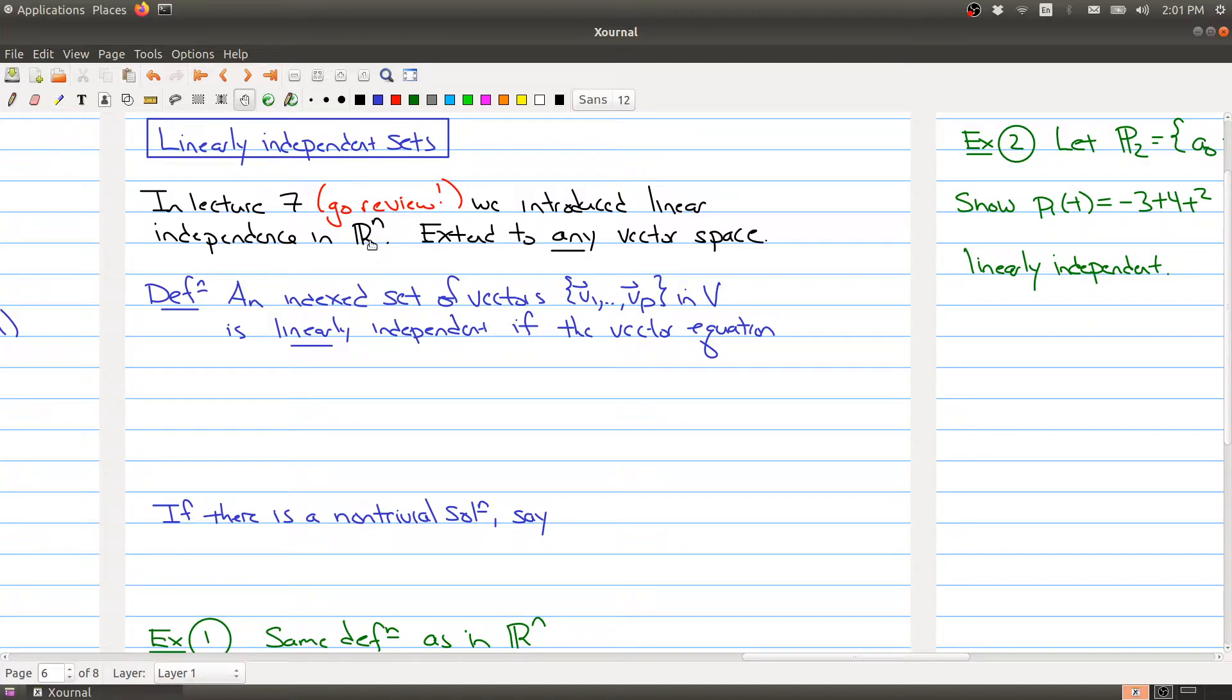One of the things we've been talking about in vector spaces is that a vector space generalizes the properties of R^n. So we would expect that we should be able to generalize the property of linear independence to any vector space.